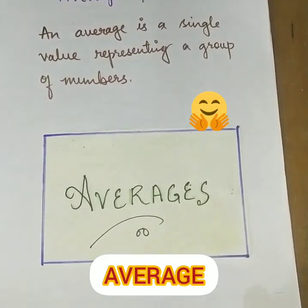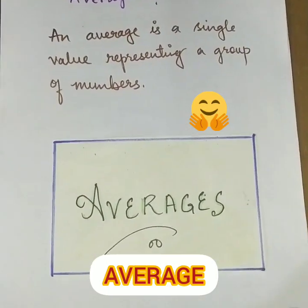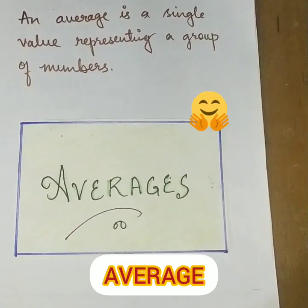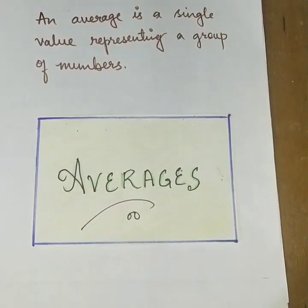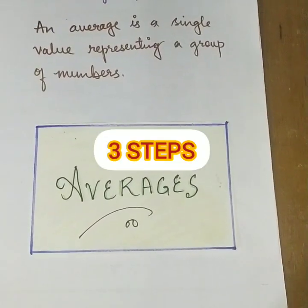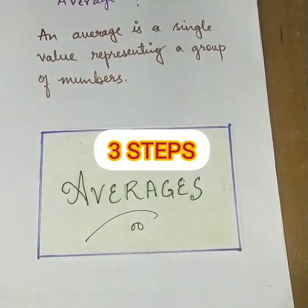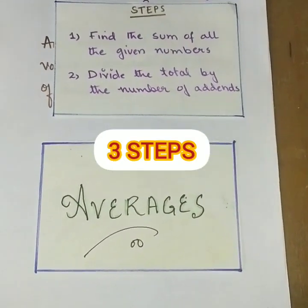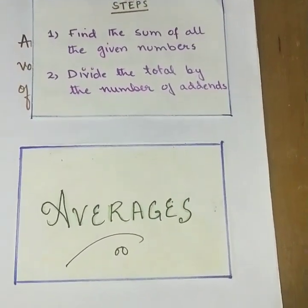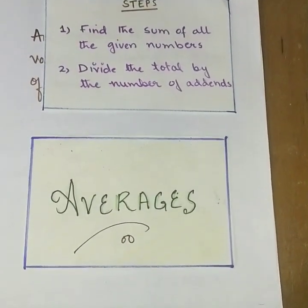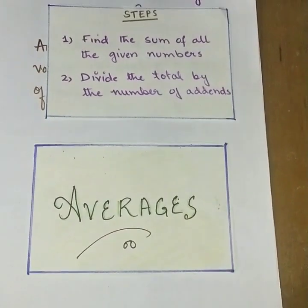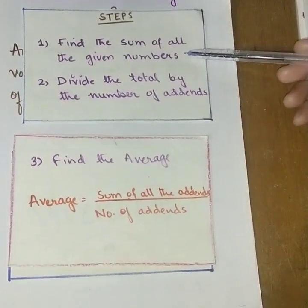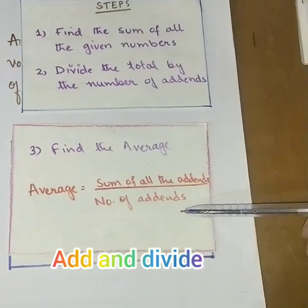Today's topic is average. An average is a single value representing a group of numbers. To find the average of a group of numbers, we use three steps: first, find the sum of all the given numbers; second, count how many numbers are given; and third, divide the sum by that count to find the average.